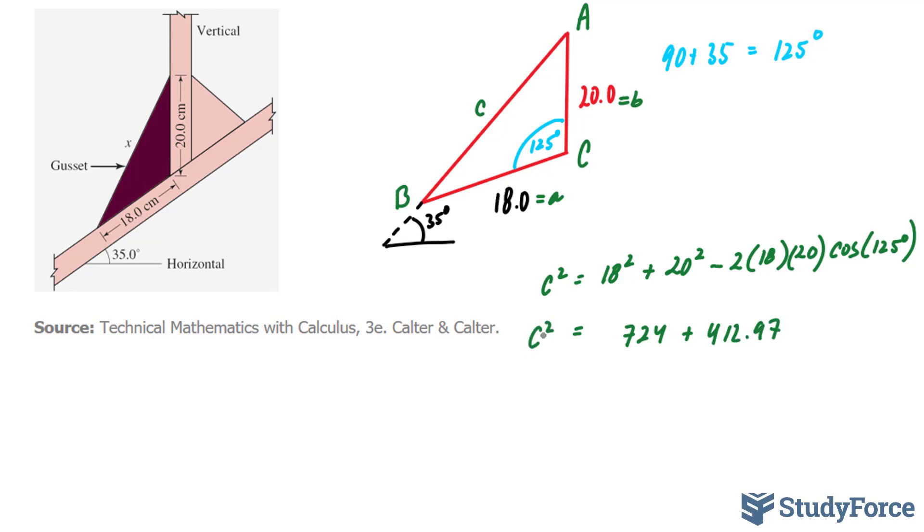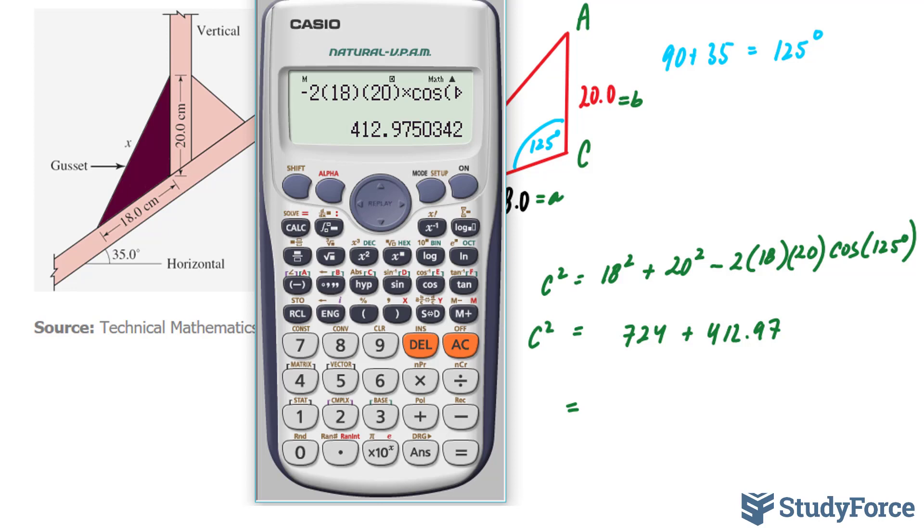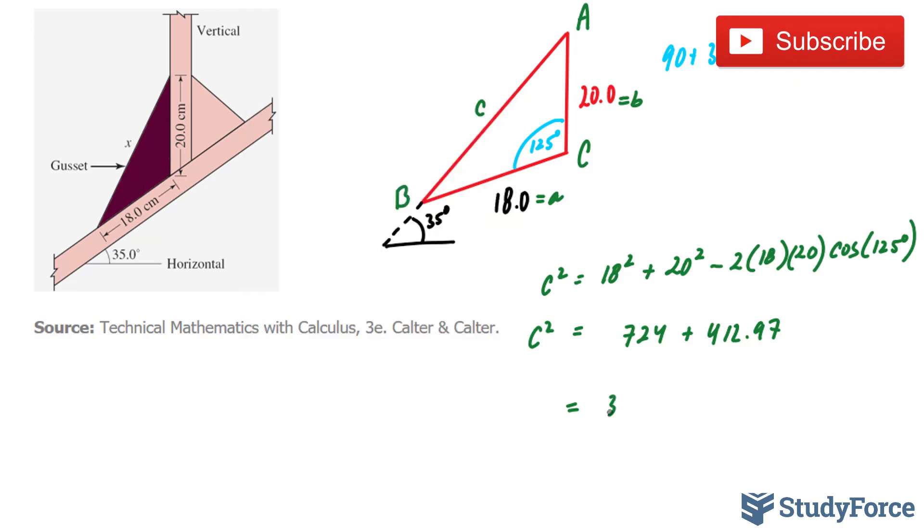And to isolate for c, we have to square root both sides. So we sum these up, and we square root. That gives us, well first let's add 724 to our number, then square root, we should end up with 33.719.